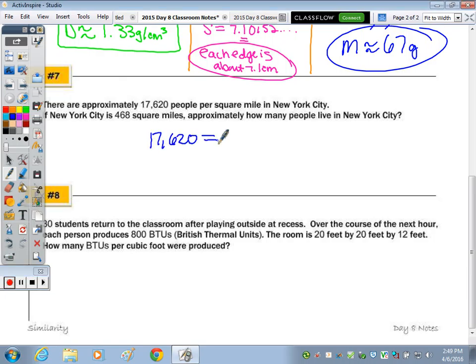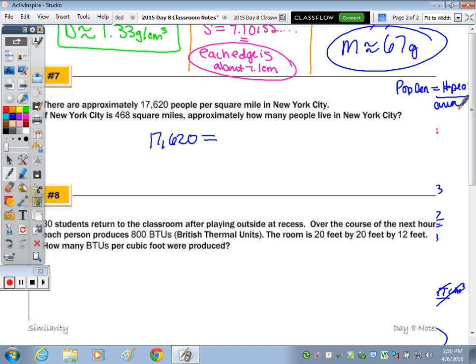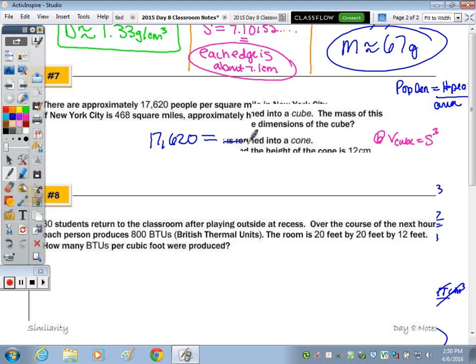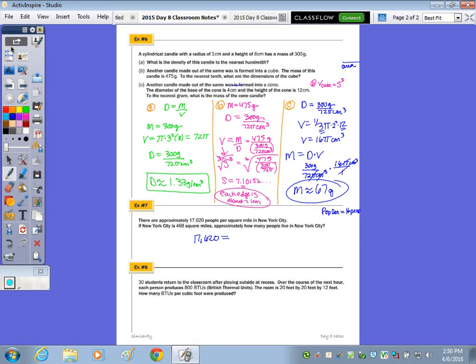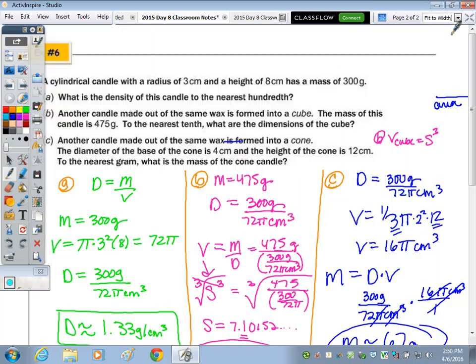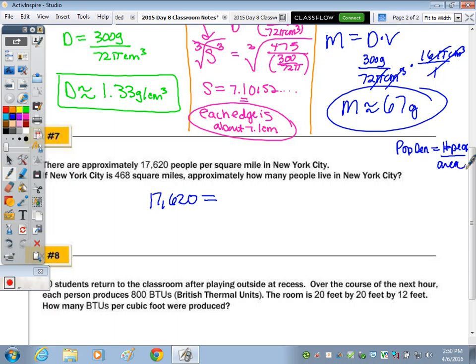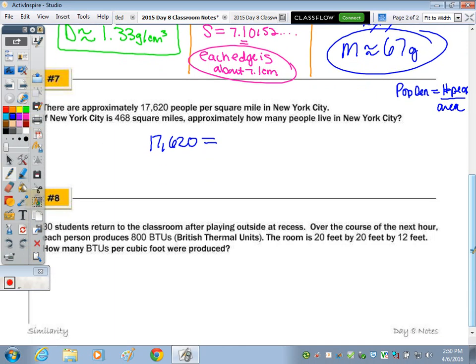What's the right sign? So population density equals the number of people over your area or space. So we know we have 17,620 people per square mile. So the right sign is going to be... Do we know the number of people? No, that's what we're looking for. So we know the population density. We're trying to find out how many people. That's this top part here. So equals X over... What's the area of our city? 468. So a quick product. X is equal to this times this.